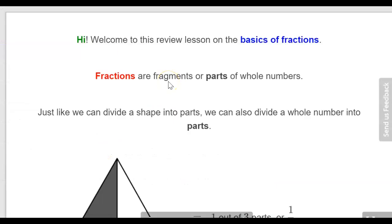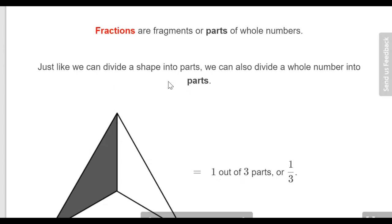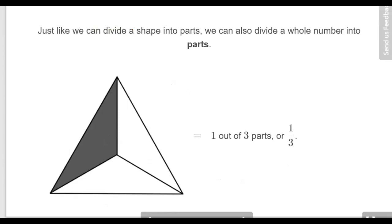Fractions are parts of a whole number. Here's an example of an object and we can see that it has three parts and one part is shaded and two parts are not shaded. So one out of the three total parts is shaded, or one third of that shape is shaded.